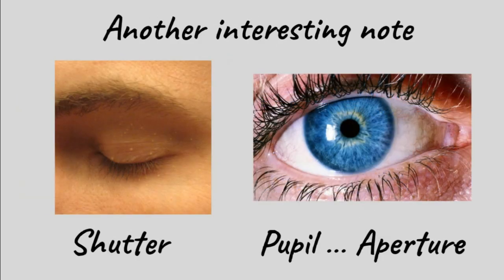Another interesting note, our eyes work the same way as a camera does. Eyelids act as a shutter which open and close and the pupil acts as an aperture and it varies the size of the opening in our eyes.